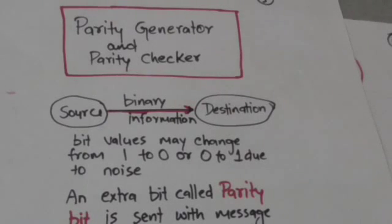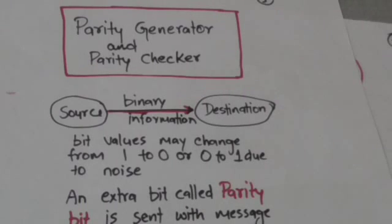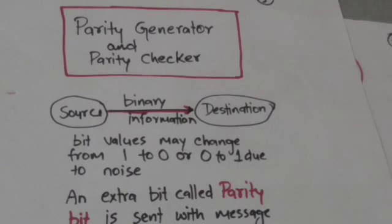Hello friends, welcome back. In this tutorial we will study about parity generator and parity checker. When some information is transmitted from source to destination, errors can occur during transmission because bit values may change from 1 to 0 or 0 to 1 due to noise during transmission. Such types of errors should be detected at the destination.